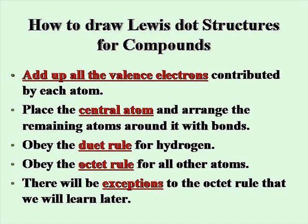First, add up all the valence electrons contributed by each atom. Place the central atom and arrange the remaining atoms around it. The central atom is usually the first atom written, unless that atom is hydrogen.